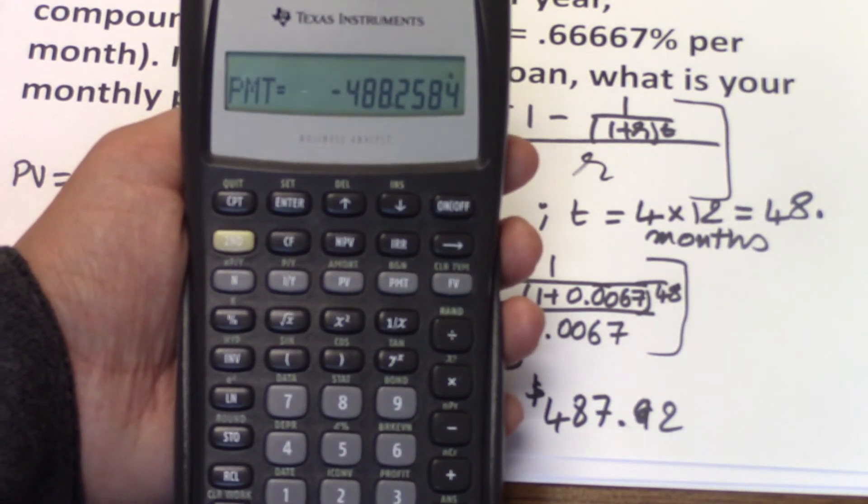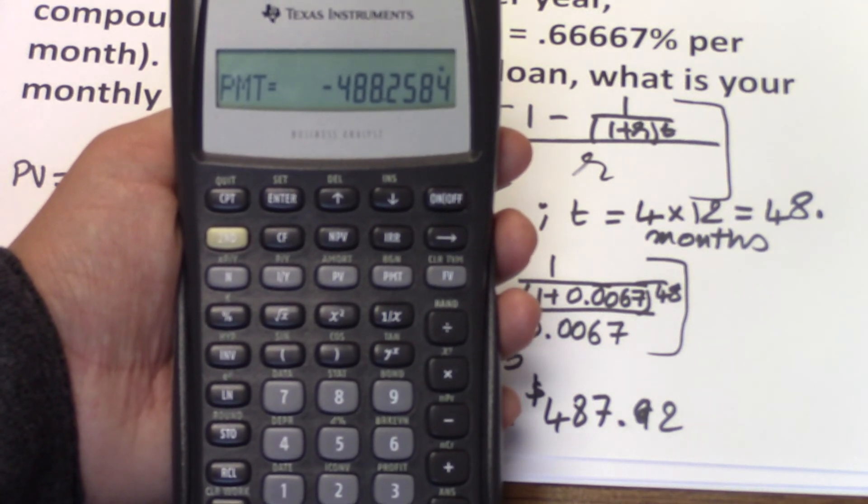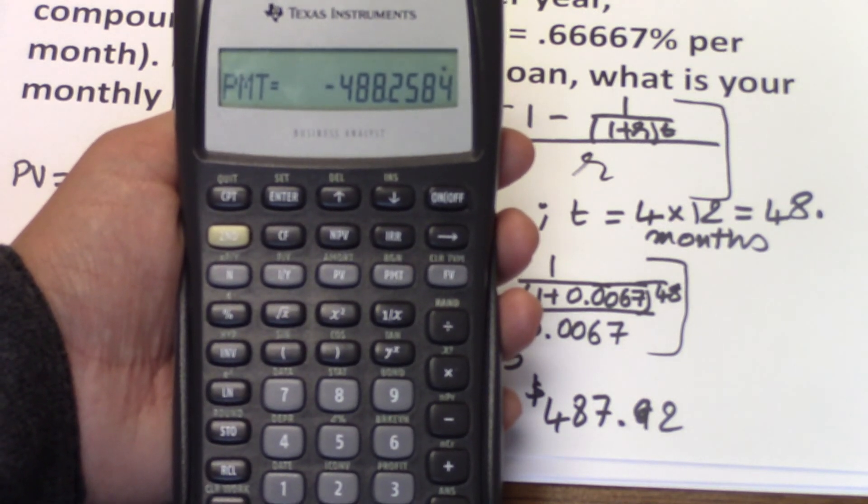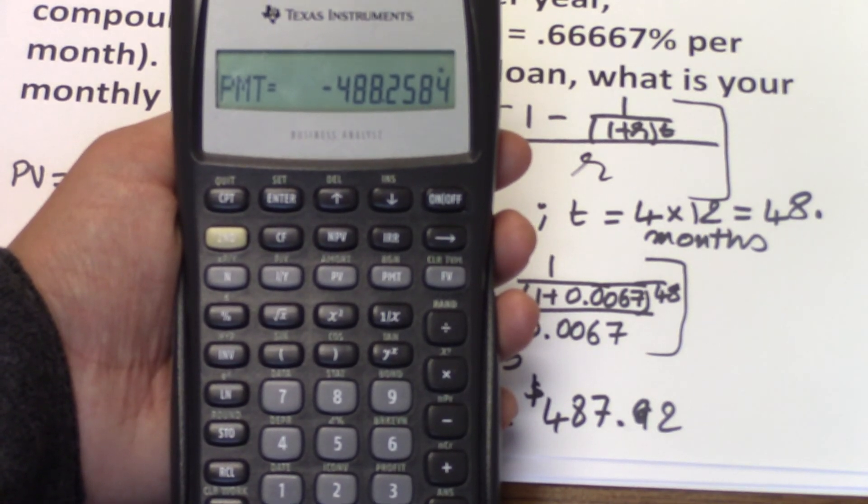It's always good to check your work using the financial calculator and see if the numbers you get are pretty close together. So $488.25 is the monthly payment on this loan.